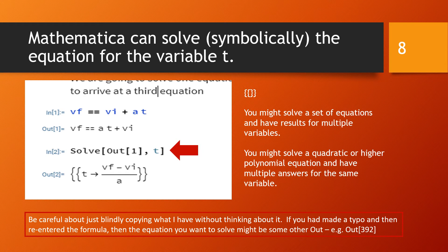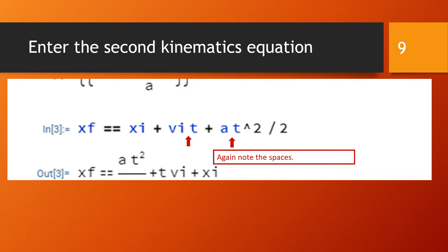So in a new cell we're going to enter the second equation from kinematics. That equation is going to be xf == xi + vi*t + a*t^2/2. So we're entering an equation and in Mathematica the equal of the equation is 2 equals. The xf, there's no space there, that is one a single variable corresponding to the final position.